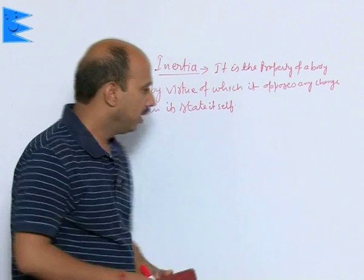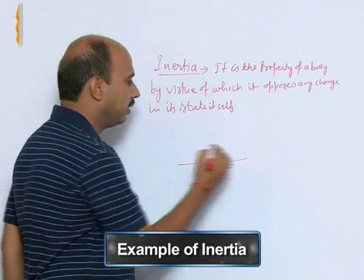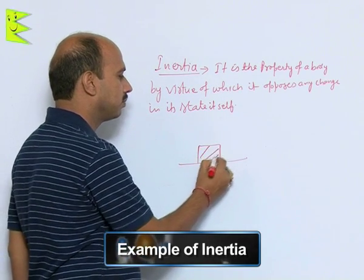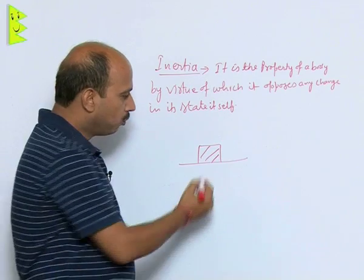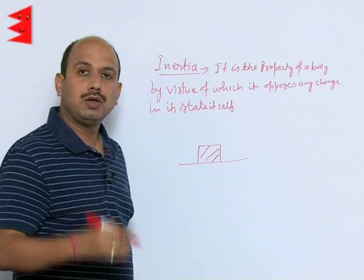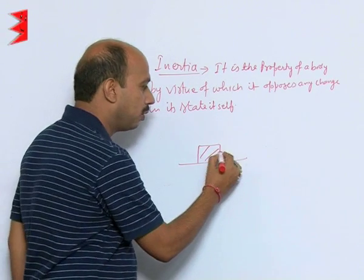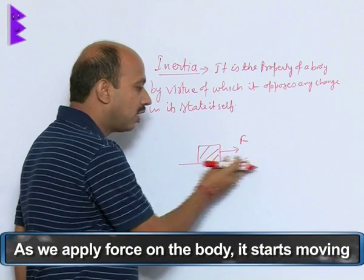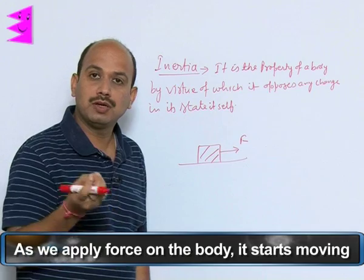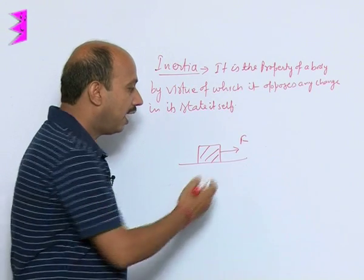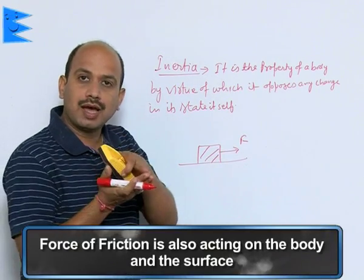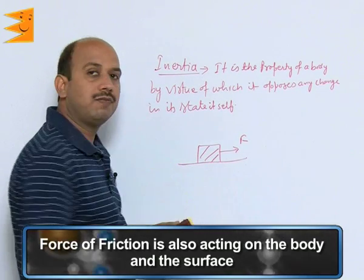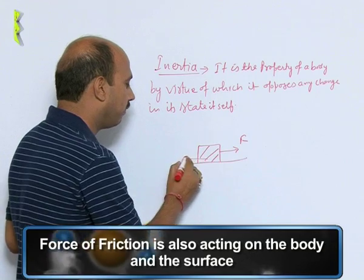For example, if you have any object on a surface and you want to move this object, you need to apply force on this side. As you apply force, it starts moving. But why do we need force? Because as you apply force, there is another force acting between the body and the surface — that force is referred to as the force of friction.